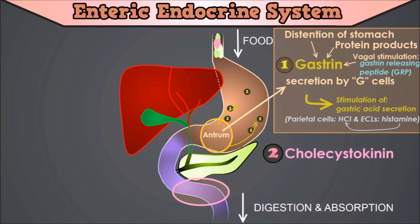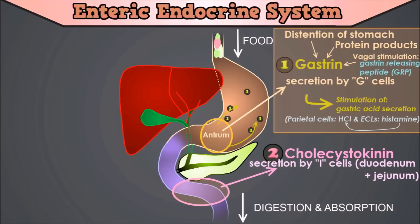Now let's move on to the second hormone, called cholecystokinin. Cholecystokinin is the principal stimulus for delivery of bile and pancreatic enzymes into the small intestine, hereby stimulating the digestion of fat and proteins. As mentioned previously, cholecystokinin and gastrin are highly similar peptides. CCK is secreted by specialized gut endocrine cells called I cells in the mucosa of the duodenum and jejunum, mainly in response to digestive products of fat, fatty acids, and monoglycerides in the intestinal contents.